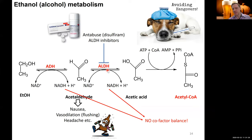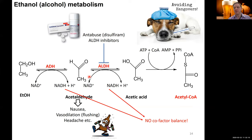We can use this knowledge to develop drugs. One example is Antabuse, which inhibits ALDH. If you take this drug and drink alcohol, acetaldehyde accumulates dramatically, causing severe nausea, strong hangovers, and headaches. It's used to help alcoholics stop drinking — a dramatic method, but it helps people who lack the willpower to stop on their own. This illustrates how knowledge of biochemistry can be used to develop treatments.